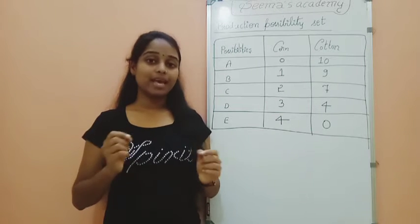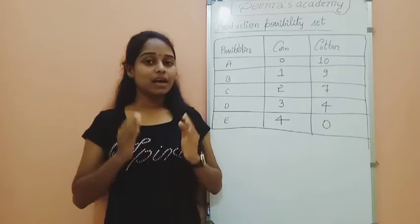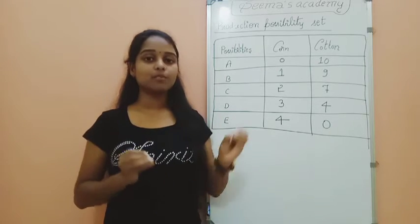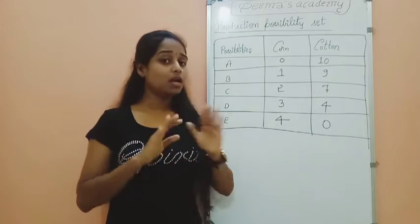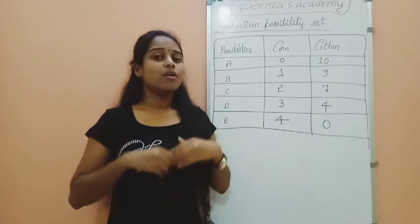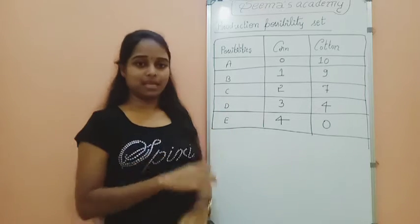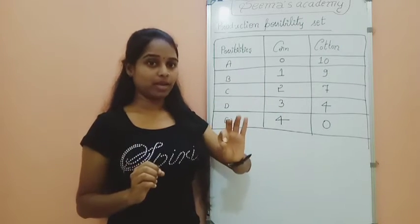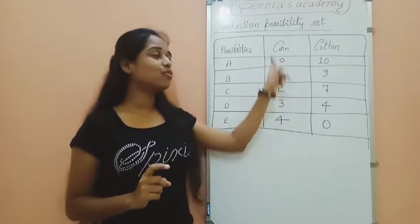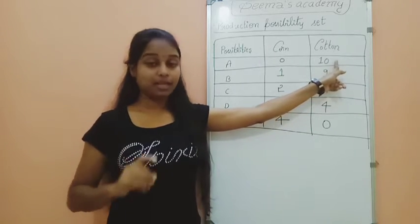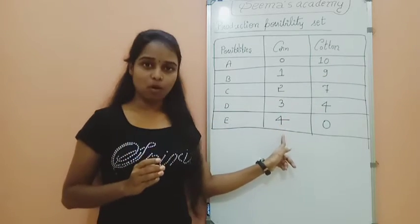To make it more simple, let me take you to the whiteboard. Connecting production possibility set to the example I gave earlier: we have replaced lace and kurkure with corn and cotton, and we are studying it in terms of production, not consumption — so it will be production of corn and production of cotton. Now, when the resources are completely utilized, the table says that one can produce a maximum of 10 units of cotton or 4 units of corn. It is not 10 units of cotton and 4 units of corn — it is either 10 units of cotton maximum or 4 units of corn.